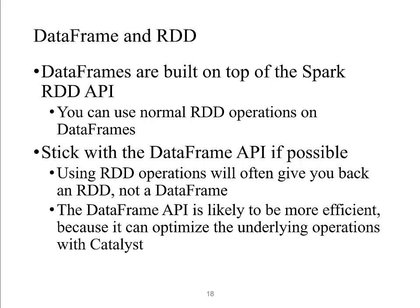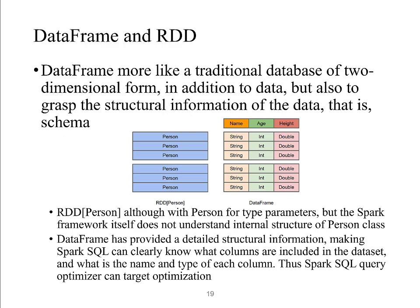Using RDD operations will often give you back an RDD, not a data frame, which makes it harder to use data frame operations on top. The data frame API is likely to be more efficient because it can optimize the underlying operations with Catalyst, and also due to the columnar storage which Catalyst makes use of as well.